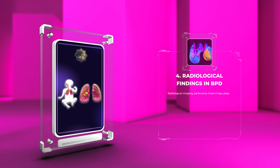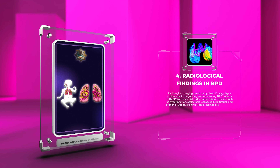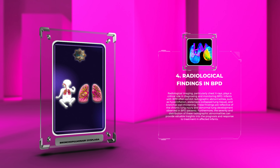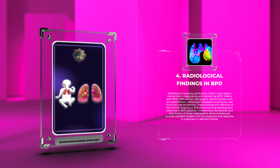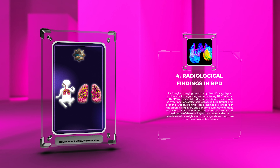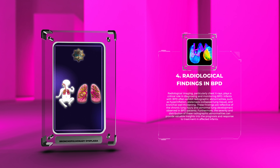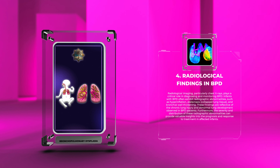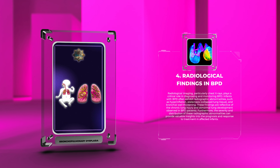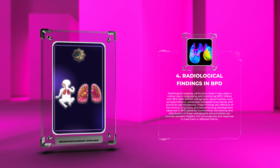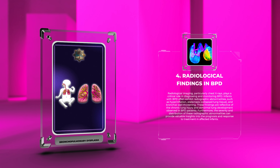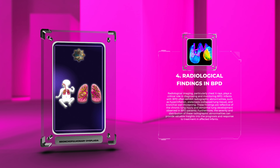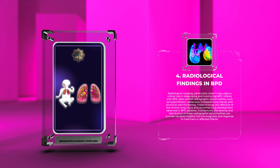Radiological imaging, particularly chest x-rays, plays a critical role in diagnosing and monitoring BPD. Infants with BPD often exhibit radiographic abnormalities such as hyperinflation, atelectasis, collapsed lung tissue, and bronchial wall thickening. These findings are reflective of the chronic lung injury and abnormal lung development observed in BPD patients.